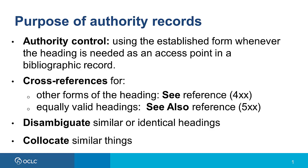Second, authority records provide cross-references for other forms of a heading. These are the C references, or the 400 fields in an authority record, which are not valid in a bibliographic record, but they refer to the authorized form of the heading. Authority records also may provide cross-references for equally valid headings, and these are the C also references, or the 500 fields in an authority record.